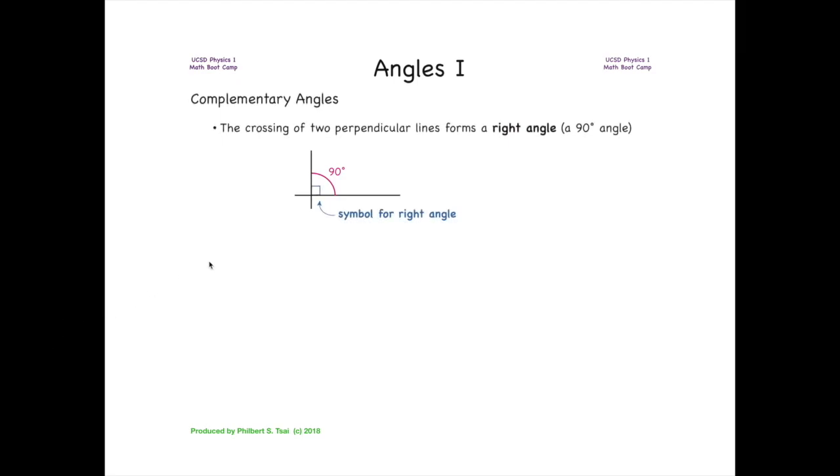We typically show this by overlaying a small square inside the angle that is 90 degrees. Two angles that add up to 90 degrees are called complementary angles. Another way to say this is that two angles that together will fill a right angle are complementary, and therefore sum to 90 degrees.